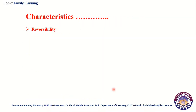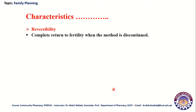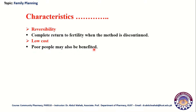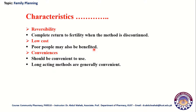The third characteristic is reversibility — when the method is discontinued, there should be a complete return to fertility. The fourth is low cost — poor people may also be benefited, meaning the cost should be low. The fifth is convenience — it should be convenient to use, and long-acting methods are generally convenient. The sixth characteristic is cultural acceptability.